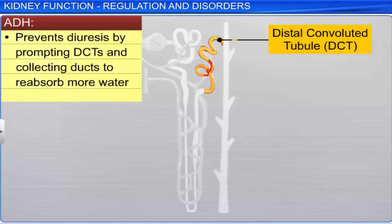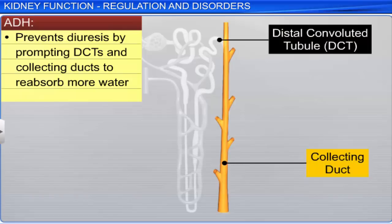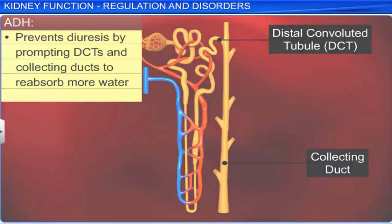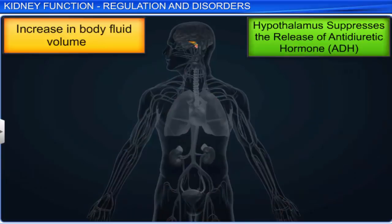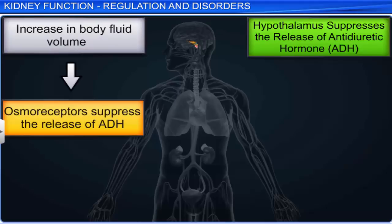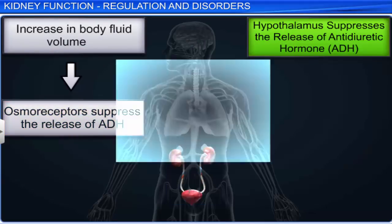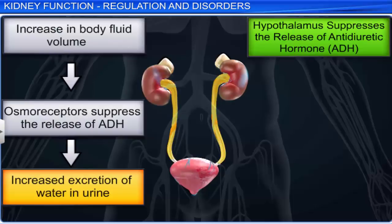ADH prompts the distal convoluted tubules (DCTs) and the collecting ducts to reabsorb more water, thereby preventing diuresis. On the other hand, if the fluid volume in the body increases, the osmoreceptors suppress the release of ADH, leading to increased excretion of water in urine.